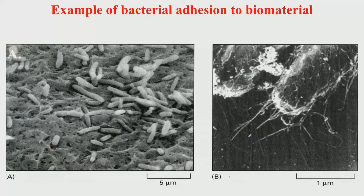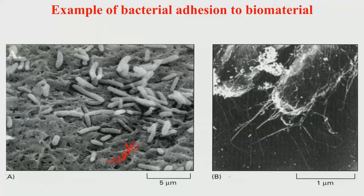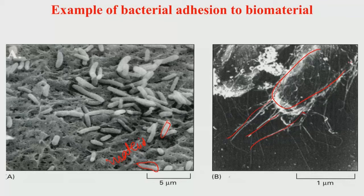This slide shows how E. coli bacteria adhere on a material substrate. This is a porous material substrate, and on this substrate the E. coli bacteria are adhering. You can see the flagella from the E. coli bacteria; these flagella are actually the sites of attachment of bacteria on a biomaterial substrate.